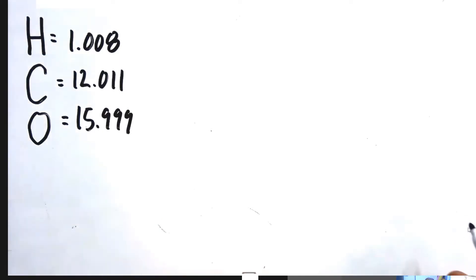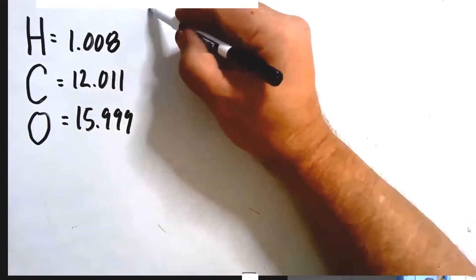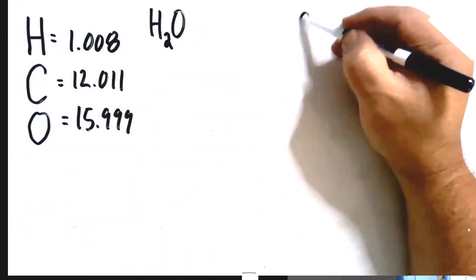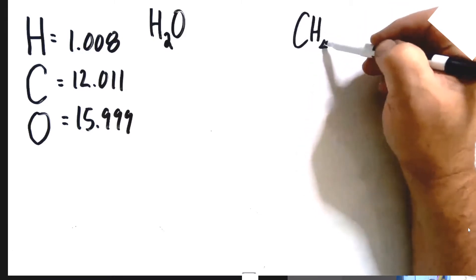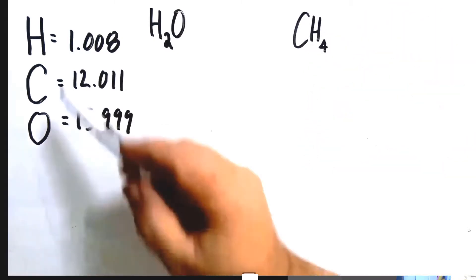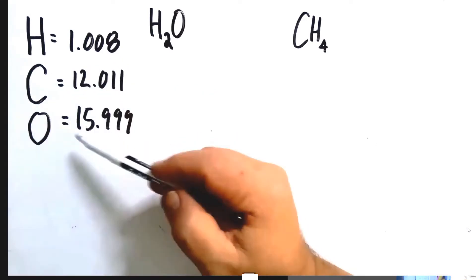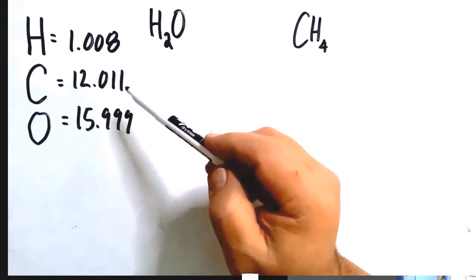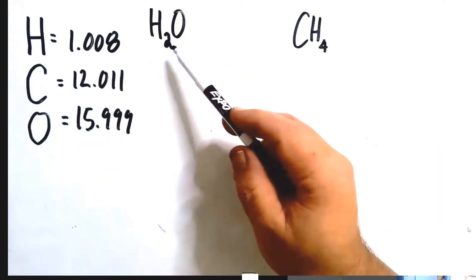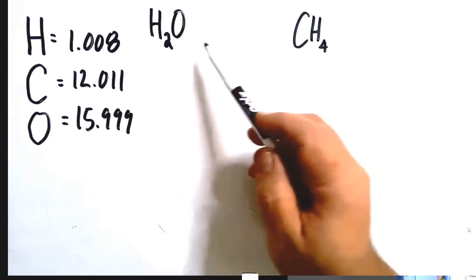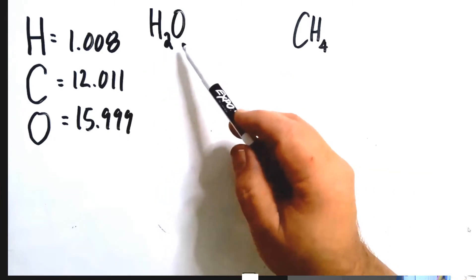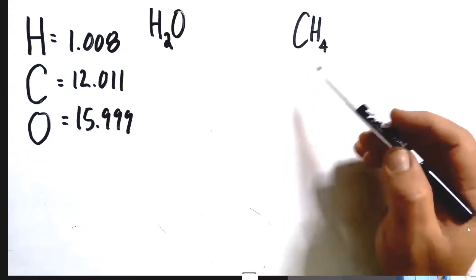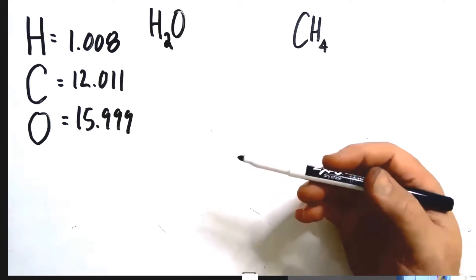To help you understand, I'm going to use two common substances: water, which has the formula H₂O, and methane, which has the formula CH₄. These are the individual molar masses of elements. What we want to do is figure out the molar mass not of elements but of compounds. Water is a compound — it has two hydrogens and one oxygen. Methane is also a compound — one carbon and four hydrogens.